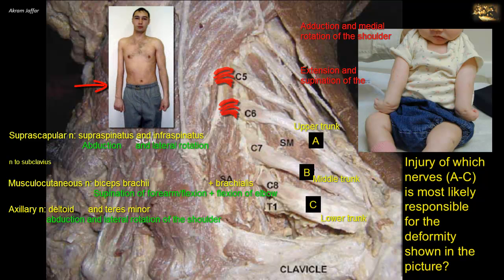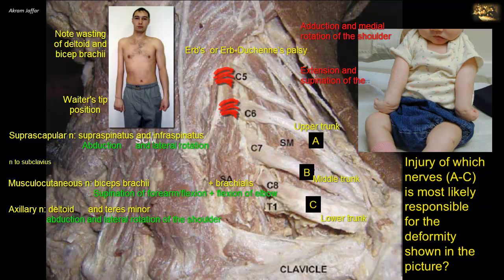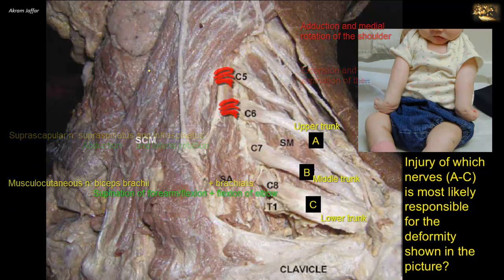The position of the upper limb is likened to that of a porter or waiter indicating their desire for a tip, so it is also called the waiter's tip position. Upper lesions of the brachial plexus are also called Erb-Duchenne palsy. In addition to the loss of motor function, there may be an area of loss of sensation on the lateral side of the arm and forearm, especially if both C5 and C6 are affected.